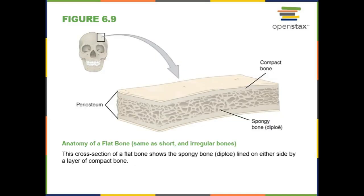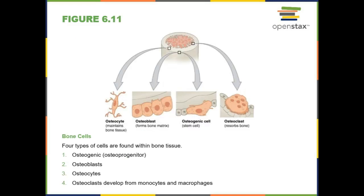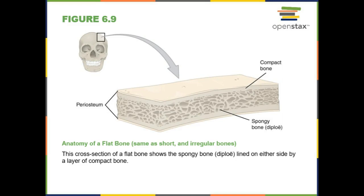Flat bones are composed of two thin layers of compact bone with spongy bone found in between, and that spongy bone typically contains red bone marrow. Short bones, irregular bones, and sesamoid bones are similarly composed of a thin layer of compact bone with spongy bone in between.